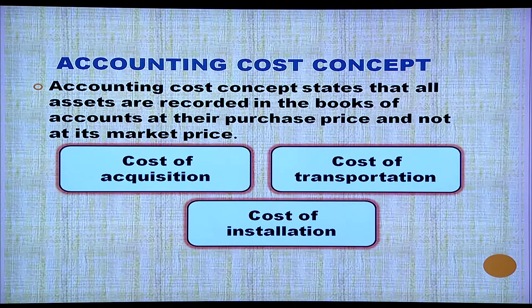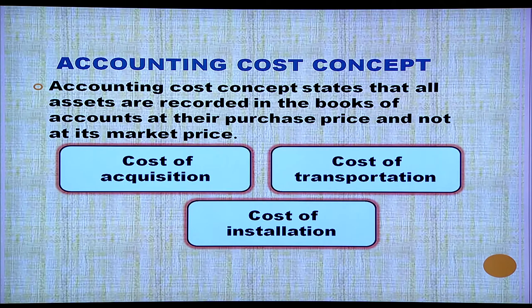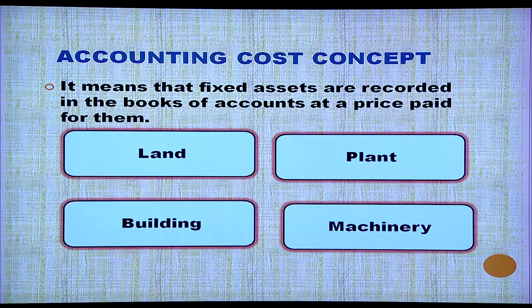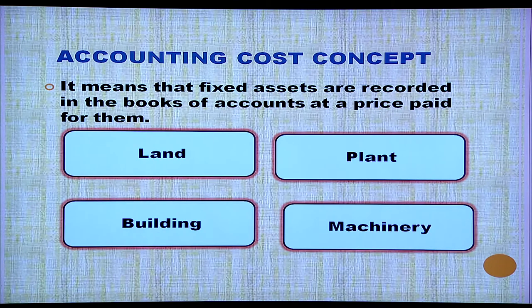Accounting cost concept states that all assets are recorded in the books of account at their purchase price and not at market price. Cost of acquisition, cost of transportation, and cost of installation are added while recording the cost of a fixed asset. Fixed assets — such as land, building, plant, machinery, etc. — are recorded at the price paid for them.